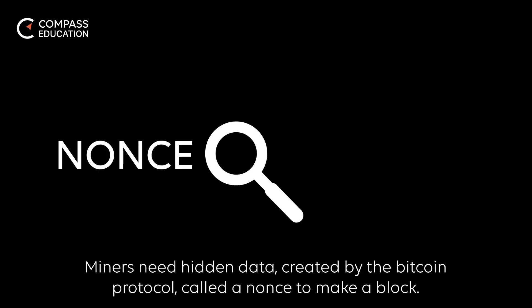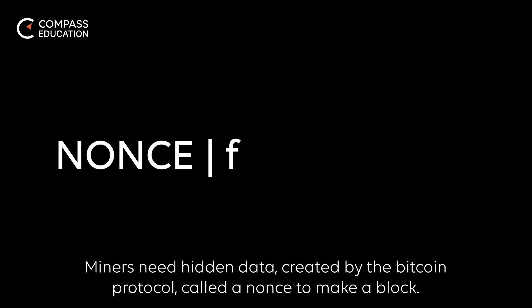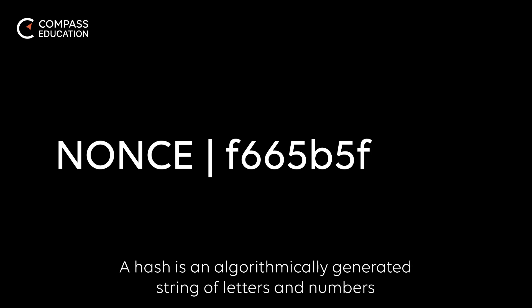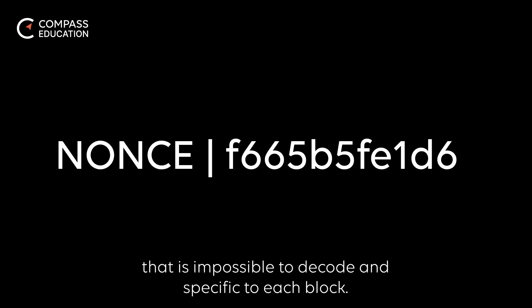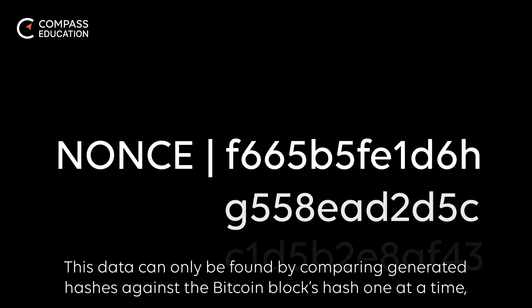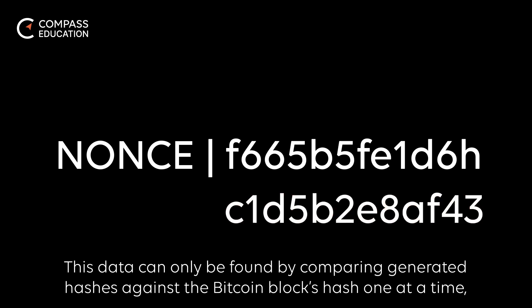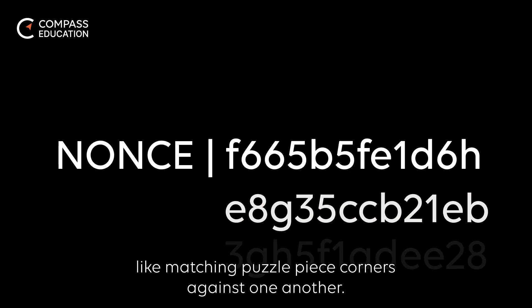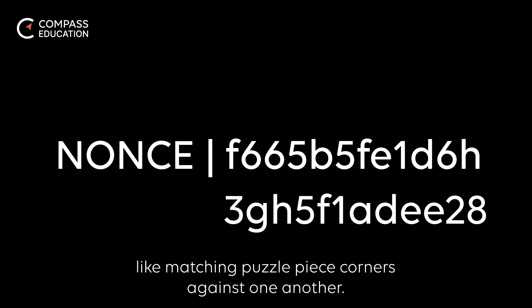Miners need hidden data created by the Bitcoin protocol called a nonce to make a block. Nonces are further encrypted in what are known as hashes. A hash is an algorithmically generated string of letters and numbers that is impossible to decode and specific to each block. This data can only be found by comparing generated hashes against the Bitcoin block's hash one at a time, like matching puzzle piece corners against one another.